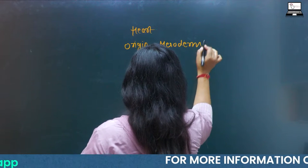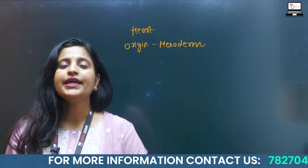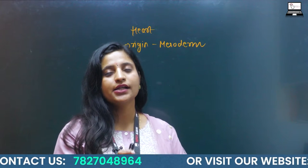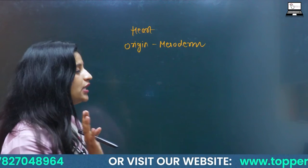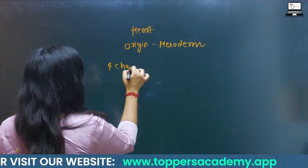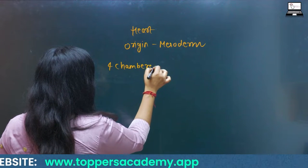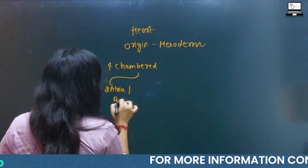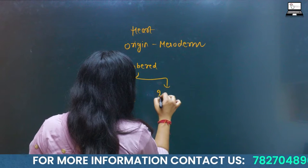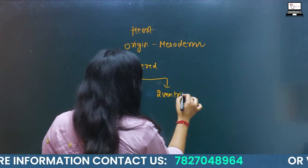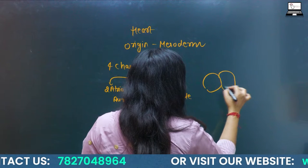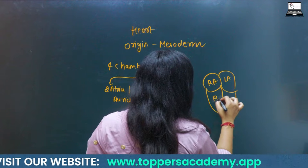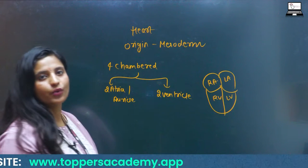We are mammals and we have a four-chambered heart. If we see our heart from the internal side, we have a total of four chambers. We have two atria, which are known as the auricles, and we have two ventricles. So this is your heart — right atrium, left atrium, right ventricle, and left ventricle.